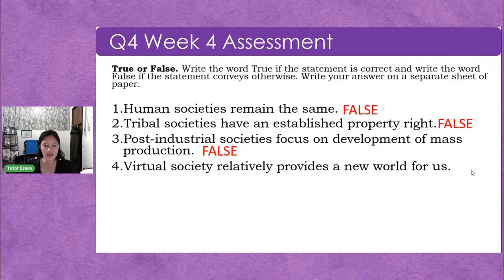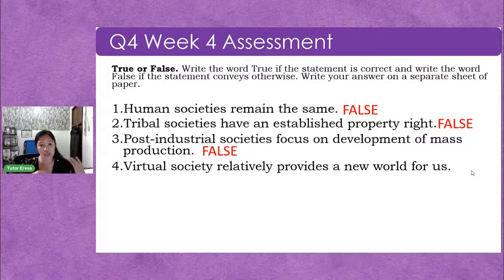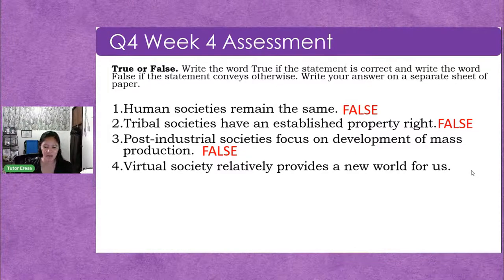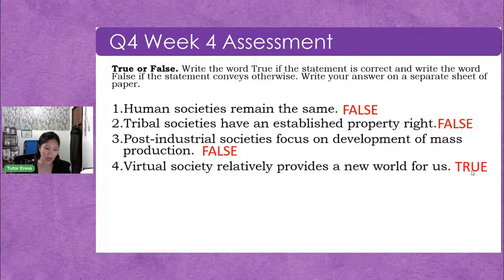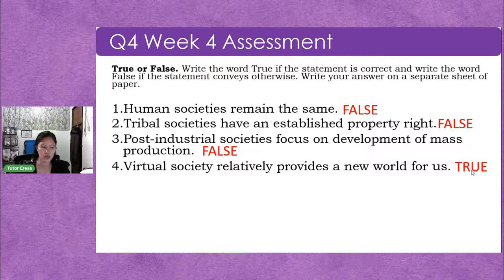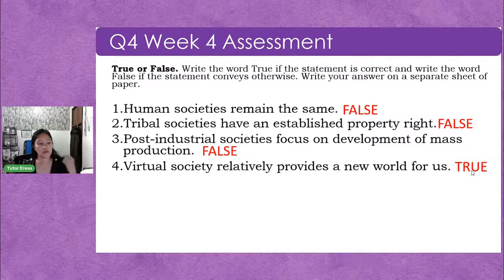Number four: Virtual society relatively provides a new world for us. TRUE — we are now in a virtual society. Meetings are held through Zoom and Google Meet, not face-to-face. In education, we have online learning. This virtual society may continue even after the pandemic. Number five: The virtual society and technological devices today are starting to reshape human person interactions and relationships. TRUE — it is changing our social relationships and interactions. Even young children's socialization skills are being affected — they can't play outside or interact face-to-face with classmates. However, we must follow health protocols strictly for our safety.